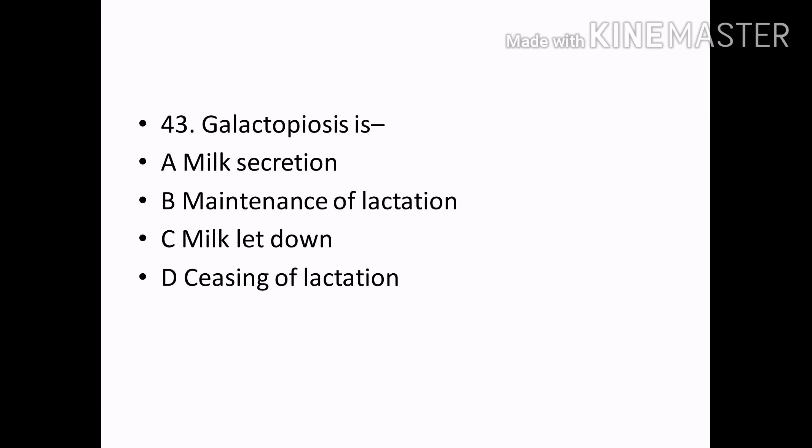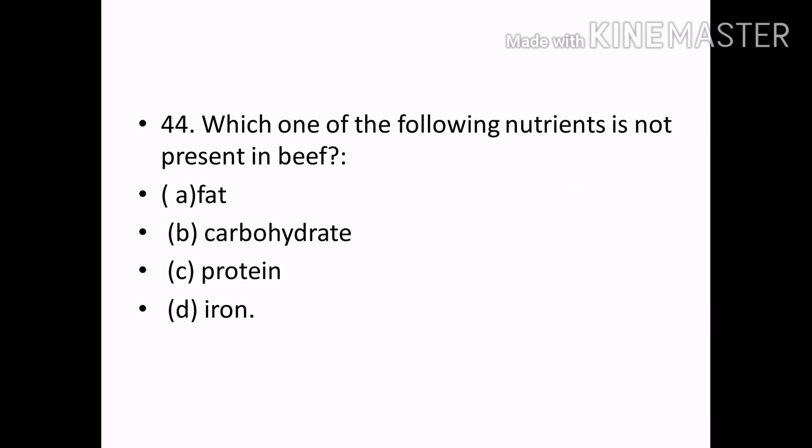Galactopoiesis is: Options — Milk secretion, Maintenance of lactation, Milk let-down, Cessation of lactation. Correct answer: Option B — Maintenance of lactation. Which one of the following nutrient is not present in beef? Options — Fat, Carbohydrate, Protein, Iron. Correct answer: Option B — Carbohydrate.